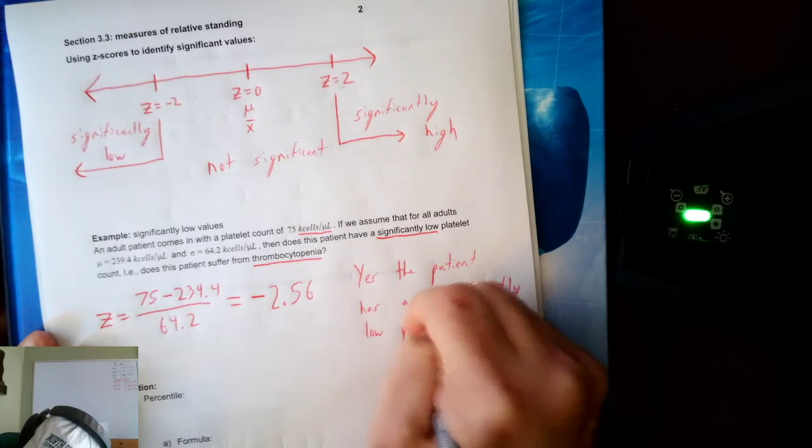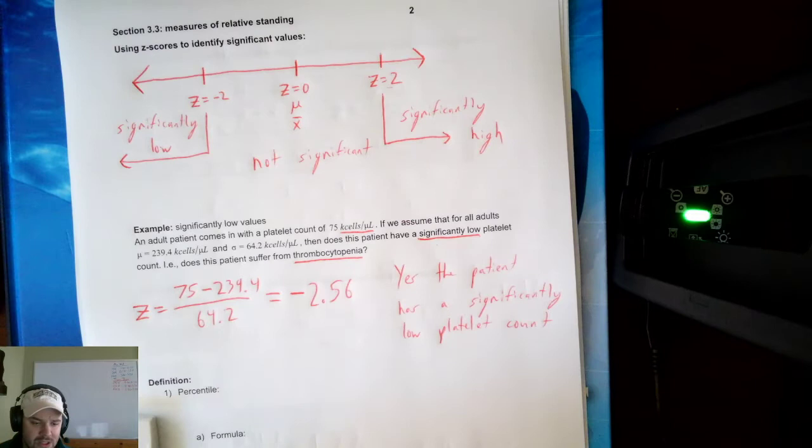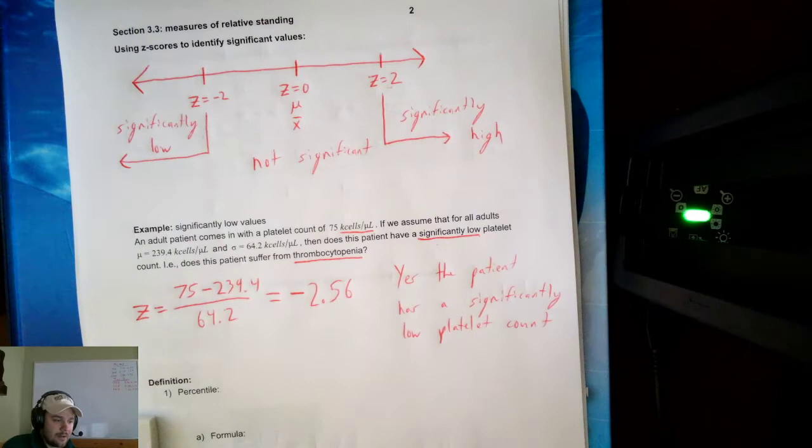That means this patient most likely does suffer from thrombocytopenia. I would want to make sure, as the attending doctor or nurse, that given these results the patient gets the appropriate treatment. And that is z-scores — one concept of relative standing.